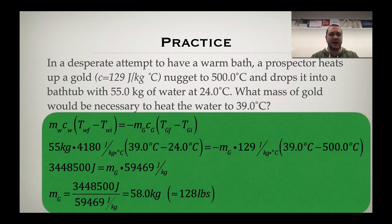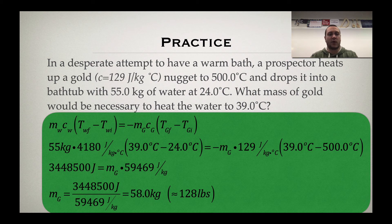We know the specific heats of each one of these materials. We know gold is 129 joules per kilogram degree Celsius — that is given to us — and water, which is in one of the tables prior, is 4,180 joules per kilogram degree Celsius. We know the mass of the water; we are solving for the mass of the gold. So our left side, we're going to see 55 kilograms times 4,180 joules per kilogram degree Celsius.